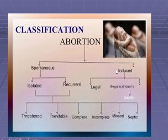Under the induced category, there are two types: legal and illegal. Legal includes cases such as chromosomal disease in the baby or injuries to the mother's health. Illegal includes sex detection and abortion due to a girl child — that is an illegal abortion.